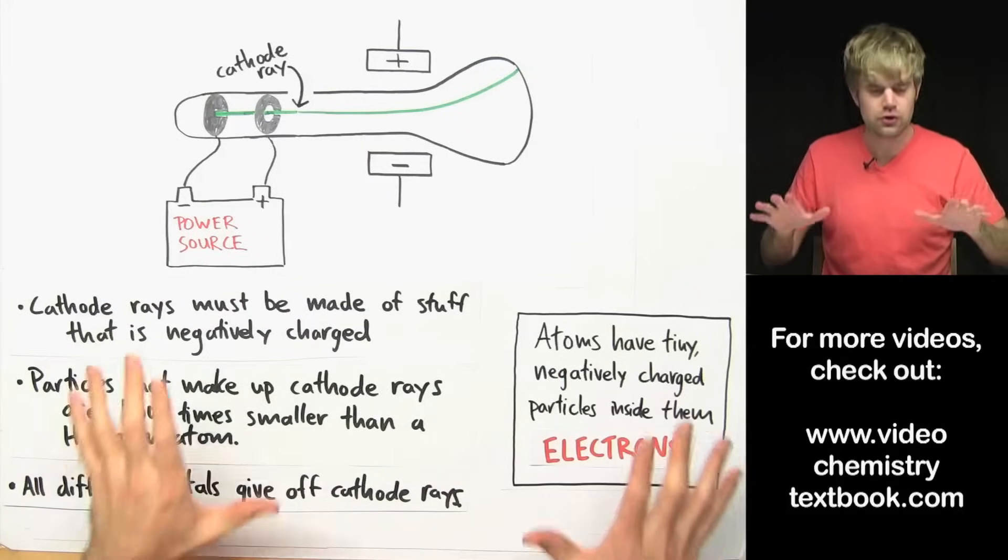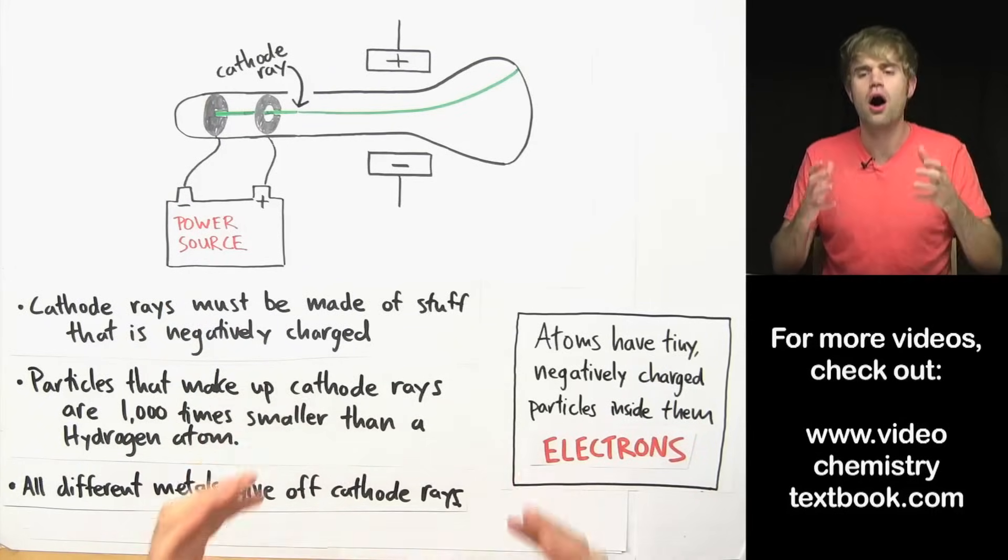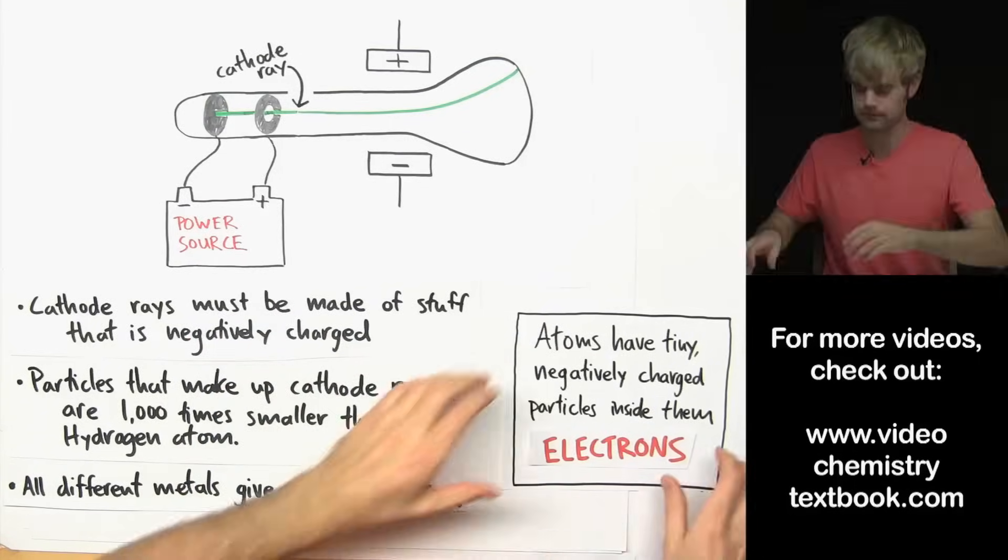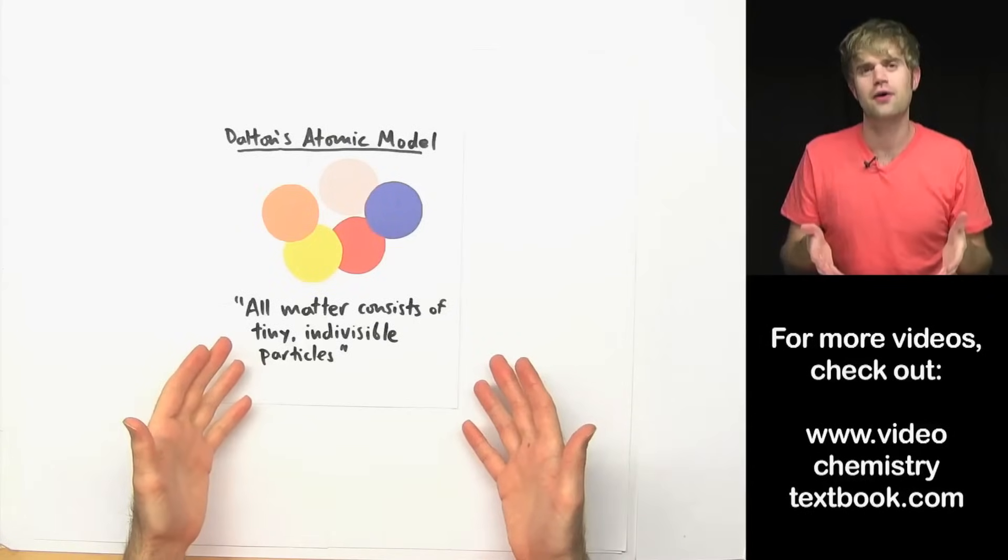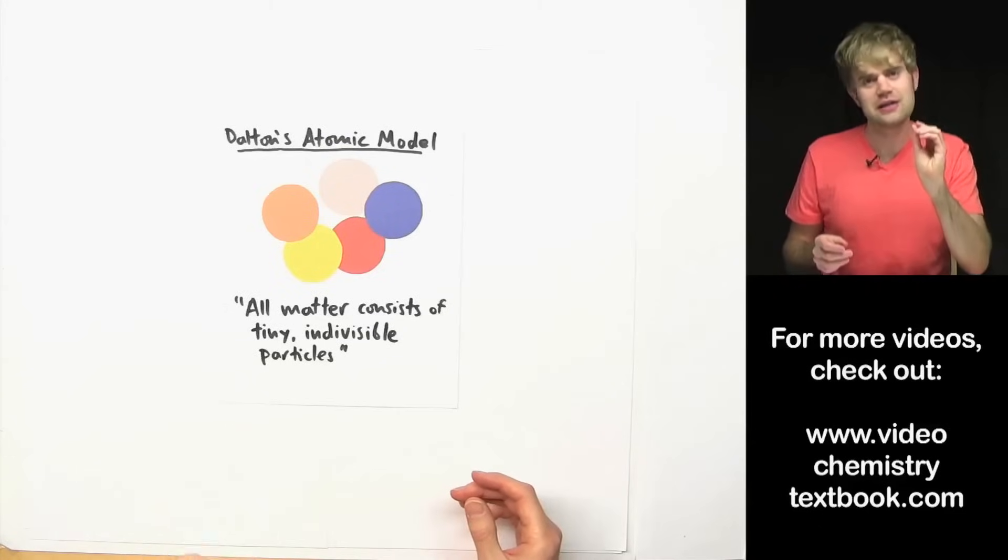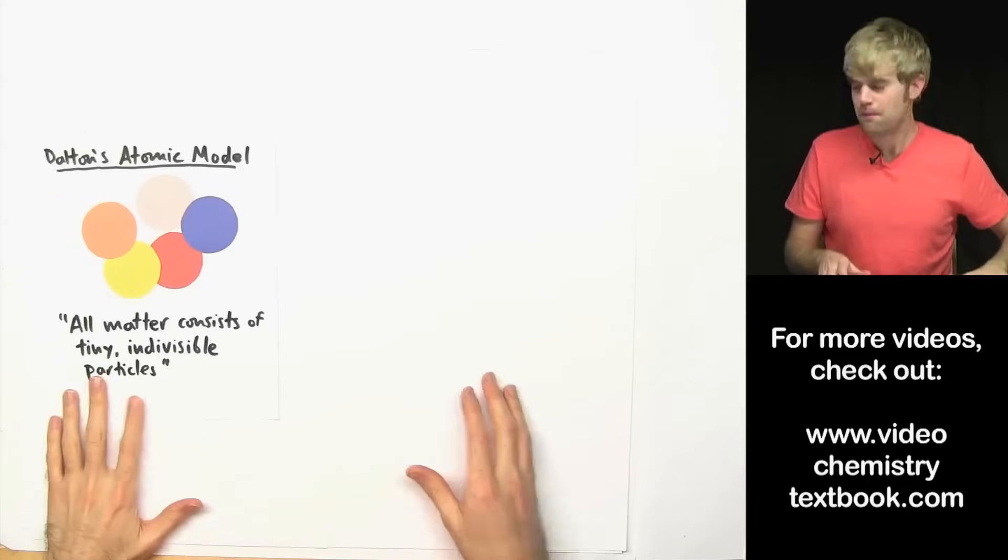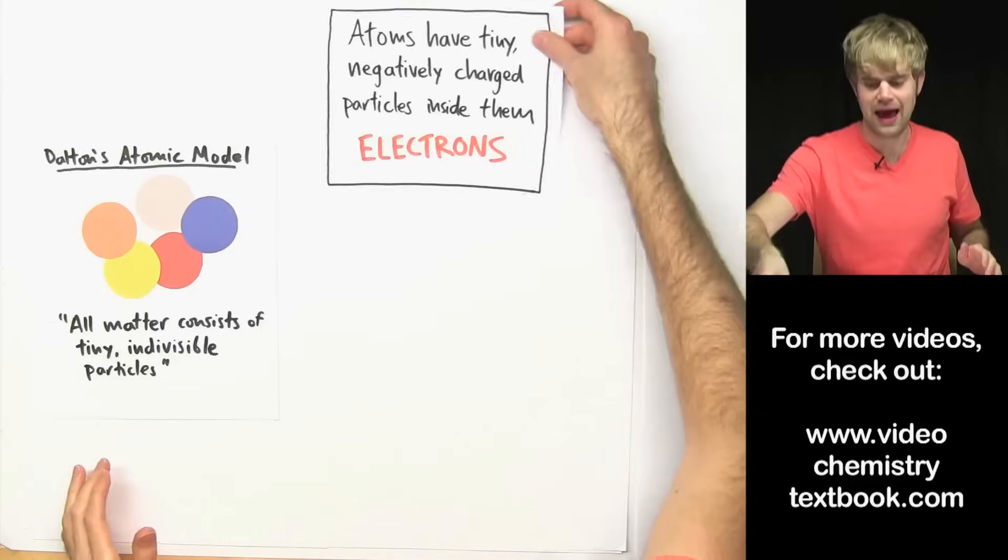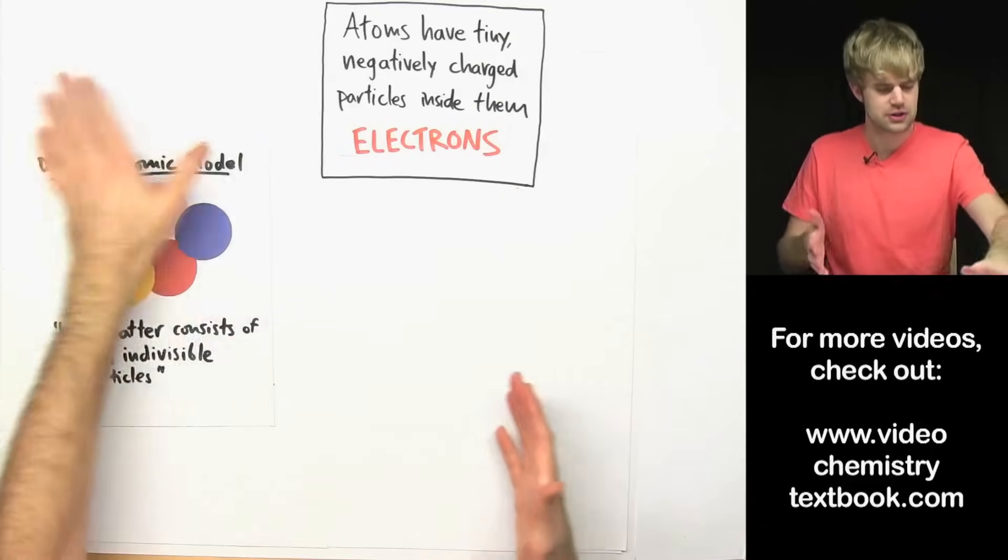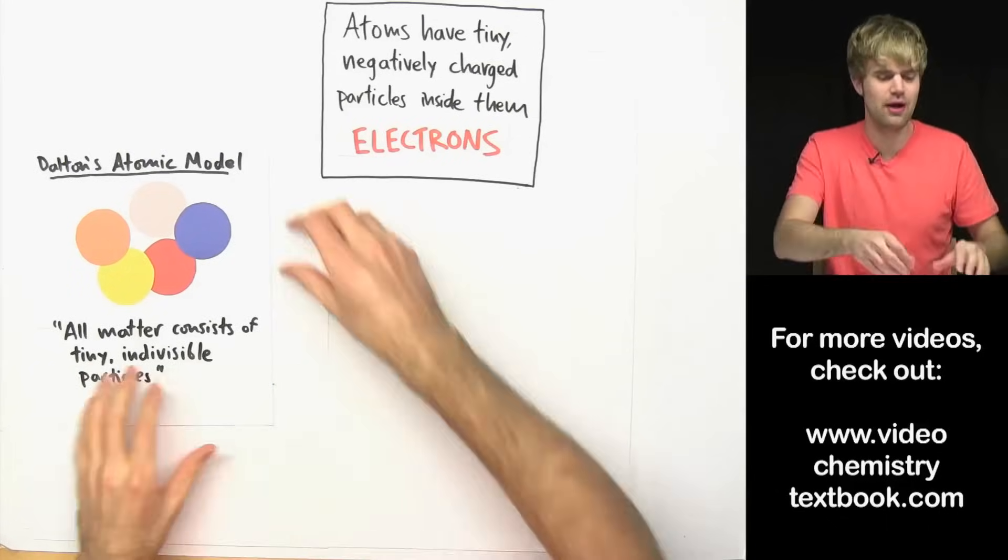Anyway, these conclusions that Thompson comes to have dramatic effects on how scientists think about what the atom actually looks like. Now, at the beginning of the video, we said that in Dalton's atomic model, atoms are indivisible, that they're not made of anything smaller. But when Thompson discovered that atoms have tiny negatively charged electrons inside them, he essentially disproved this model, at least the part about the indivisible atoms.